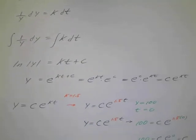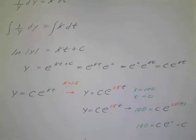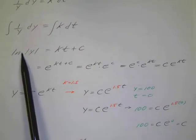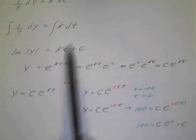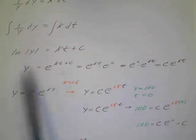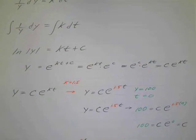And then again, we'll change this to an exponential equation. So what's my base? My base is e. What's my exponent? kt plus c. And what's my answer? y. And since this is always positive, exponential is always positive, I don't need the absolute value.